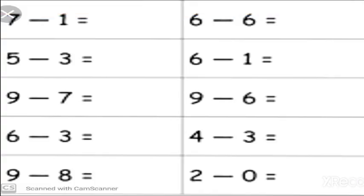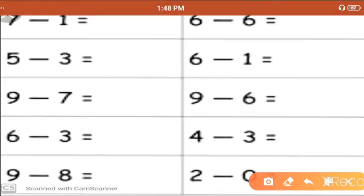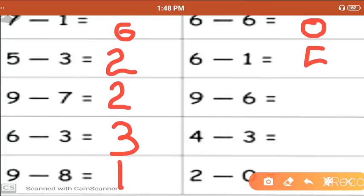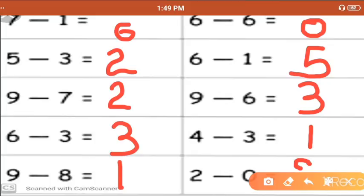Now look here — we have some more sums. 7 minus 1, we get 6. 5 minus 3, we get 2. 9 minus 7, we get 2. 6 minus 3, we get 3. 9 minus 8, we get 1. 6 minus 6, we get 0. 6 minus 1, we get 5. 9 minus 6, we get 3. 4 minus 3, we get 1. 2 minus 2, we get 0.